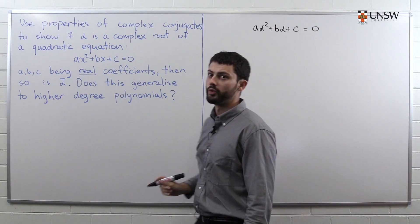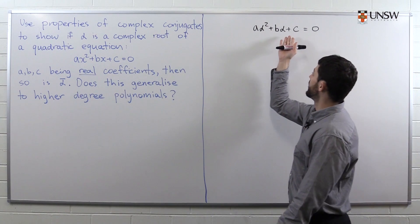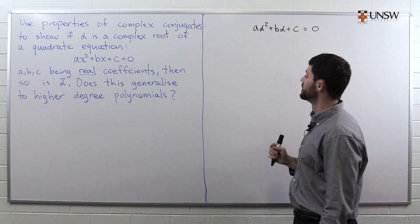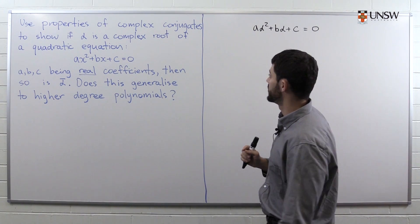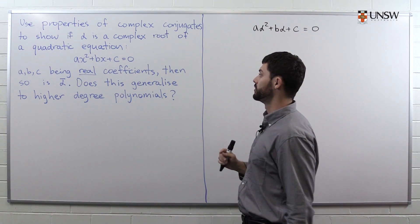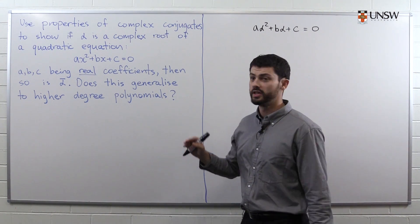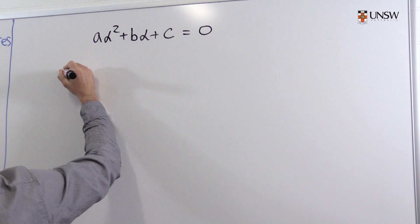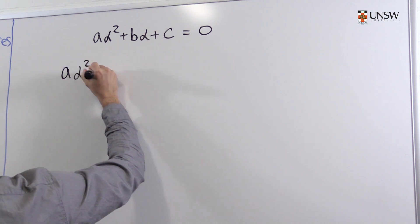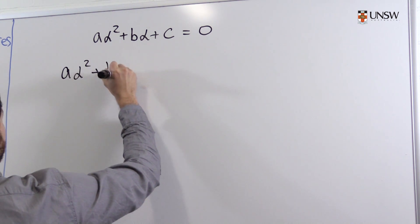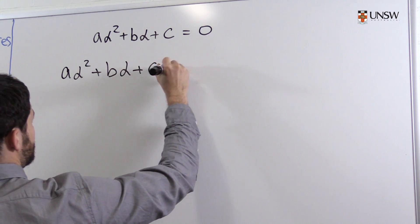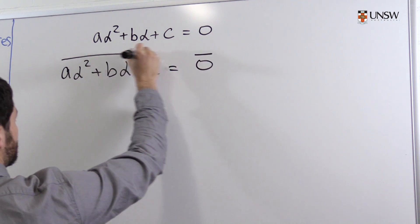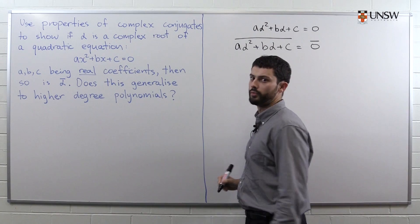We also need to show that if we replace alpha with alpha conjugate, we still satisfy this equation. The way to introduce conjugates is to conjugate both sides of this equation. So what we get is a·alpha squared plus b·alpha plus c equals zero, and we conjugate both sides.